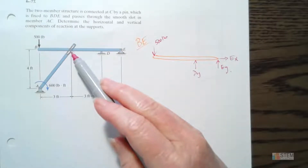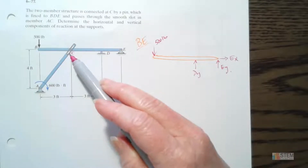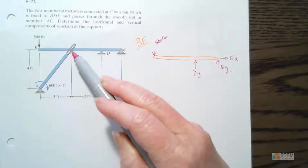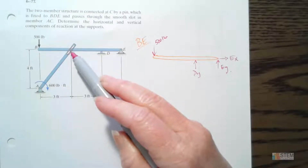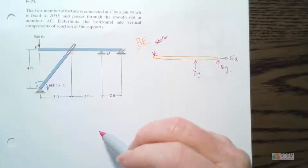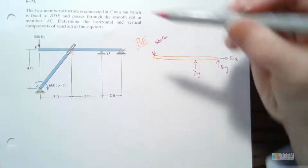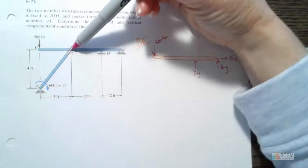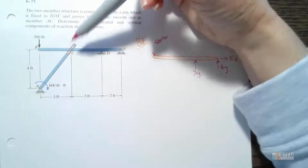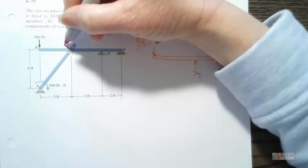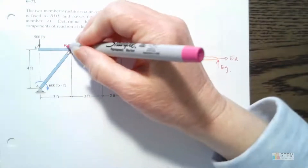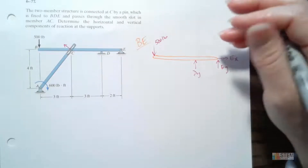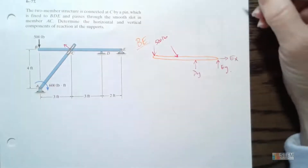Now let's look at C. We've got this smooth slot, so there's no friction. This pin at C is able to slide back and forth inside that slot, so there won't be a force in that direction. But the member can't move perpendicular to the slot because the pin is holding it in place. So there has to be a force perpendicular to that slot. I'm going to draw it going down this way for this diagram.